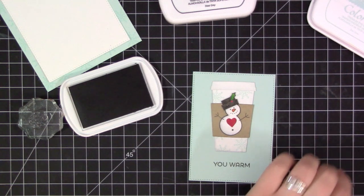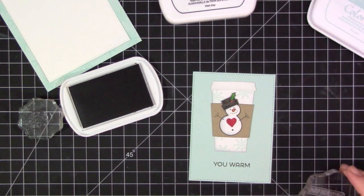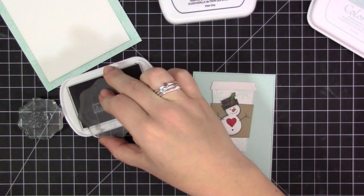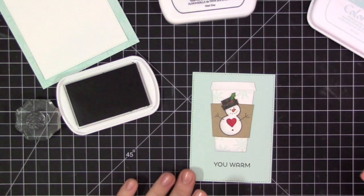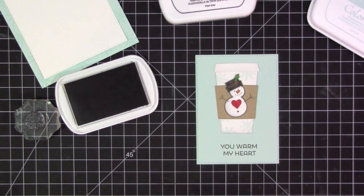So now I'm just going ahead and stamping on the sentiment. I'm using the 'You Warm My Heart,' and I've cut this sentiment apart. I've used it on a couple different cards, and I think at this point now every word is its own stamp.